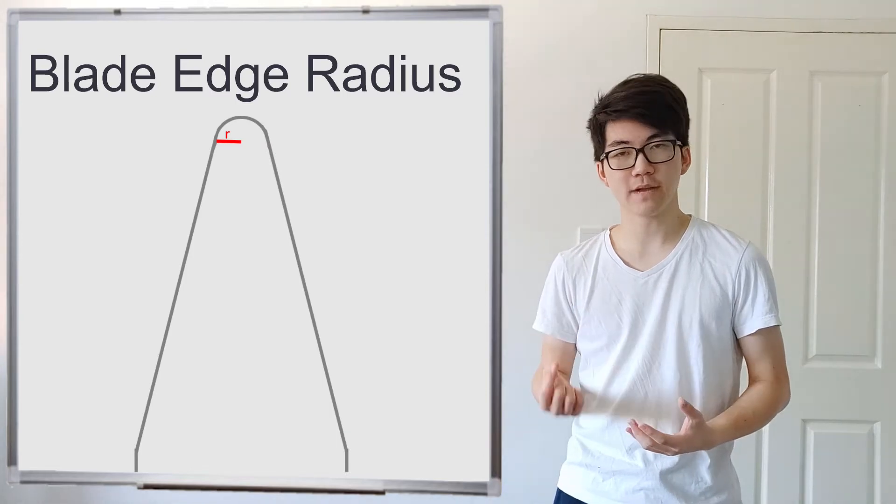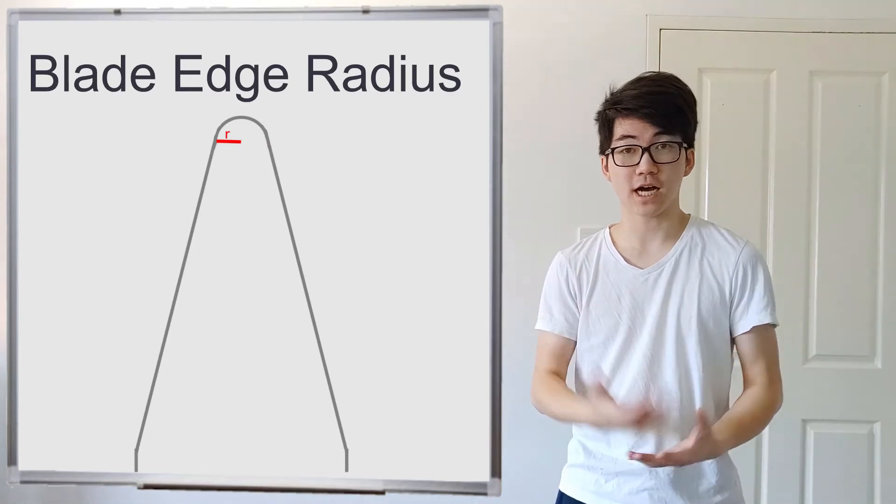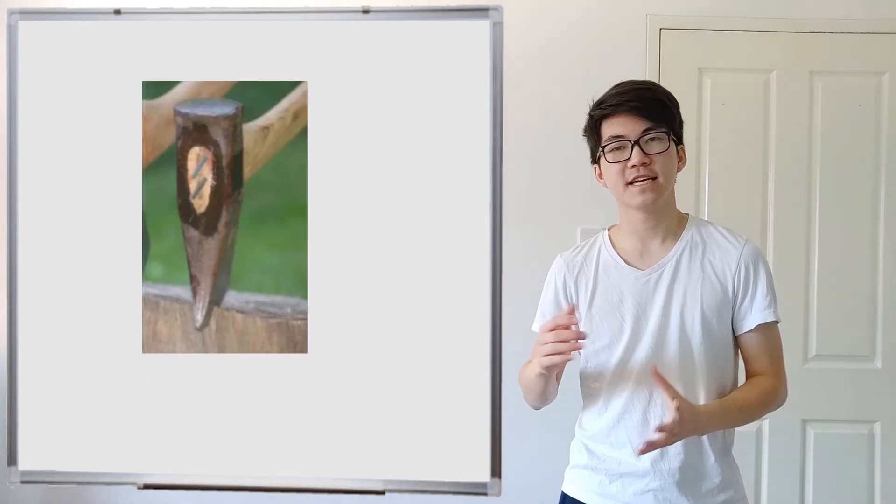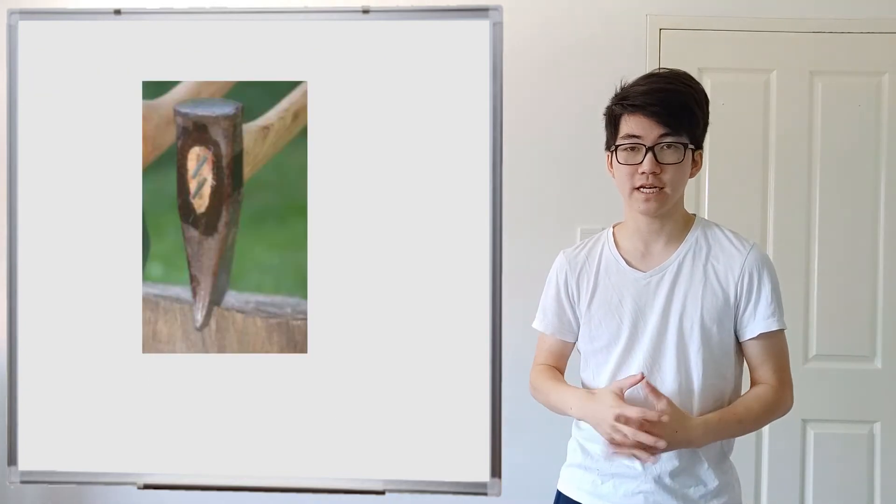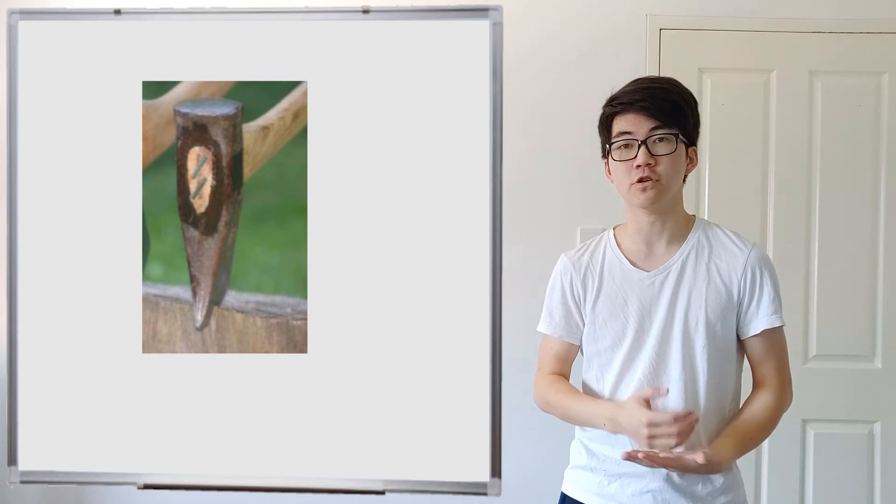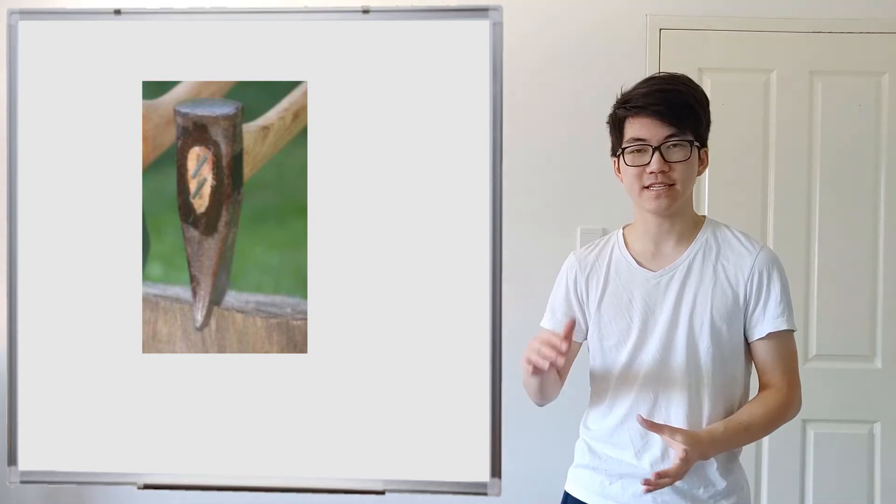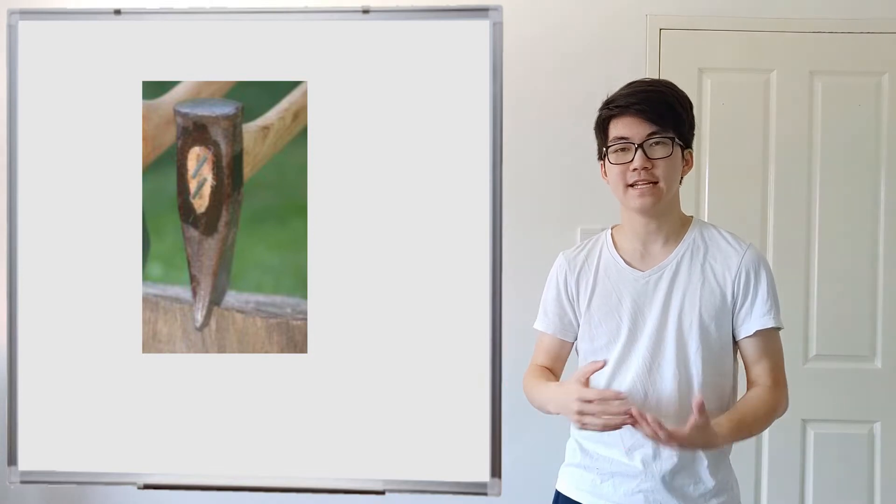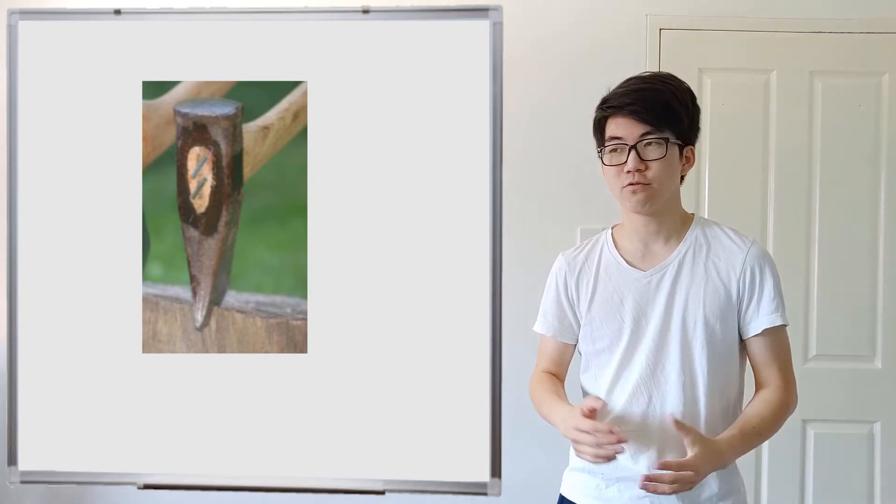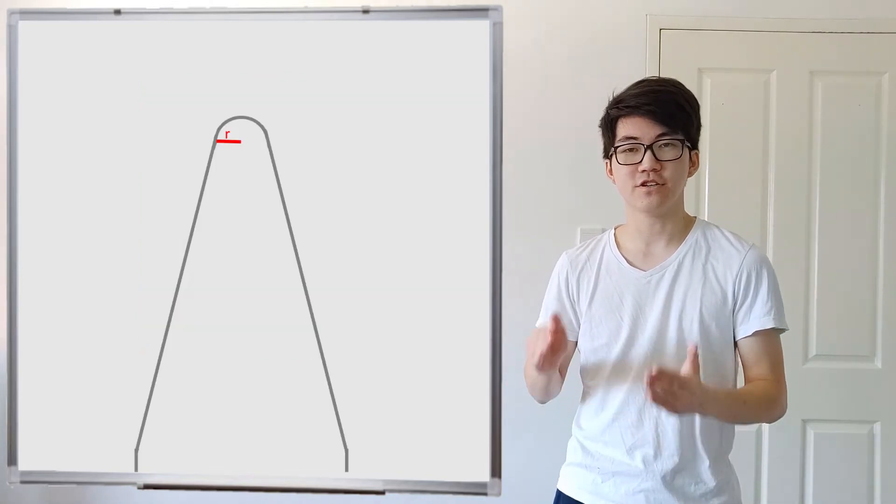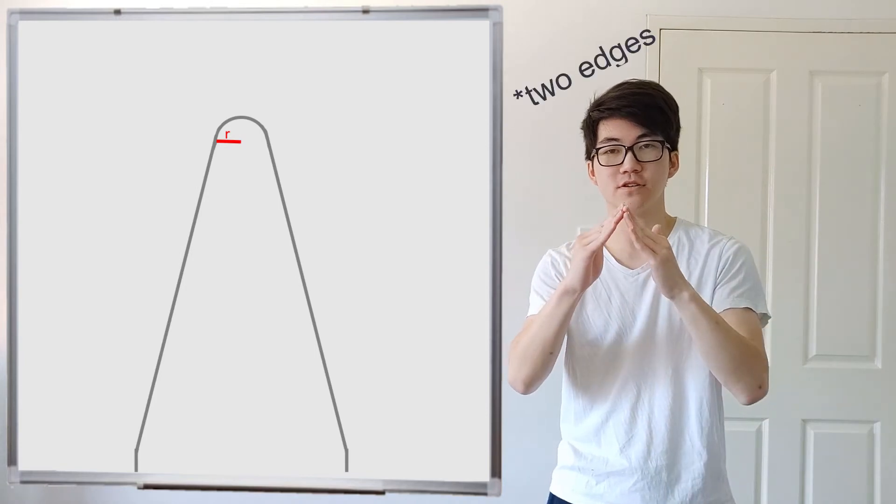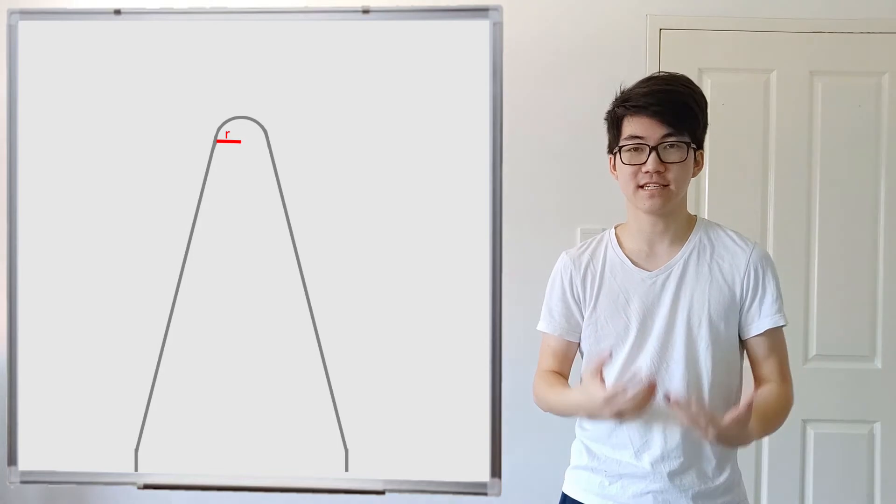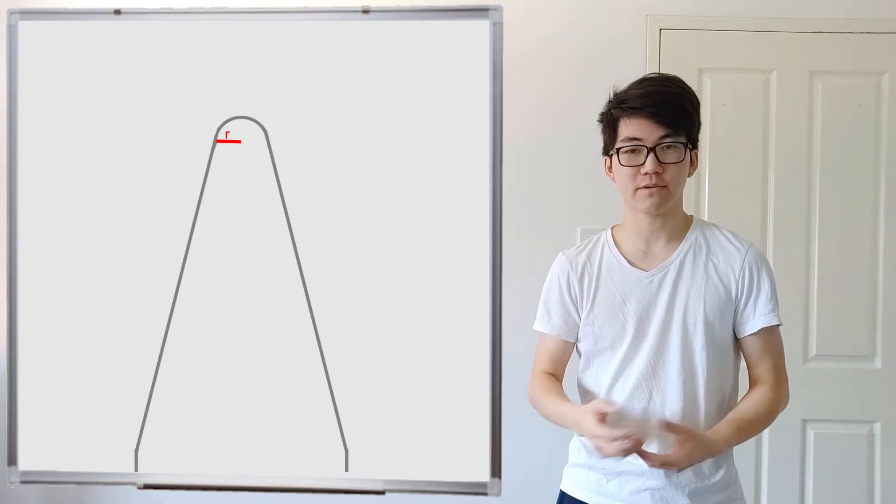So having a small blade edge radius would be a sharp knife, and having a large blade edge radius is a dull knife. And seeing that cross sectional semicircle is a lot easier when you look at a dull wood splitting axe. You can see that there's pretty much a semicircle on the end of the blade. And that's because it's really dull. Whereas if you sharpen that, then you'd think that you're getting the two points to come to a sharp point. But actually at the tip of that point is still a smaller round semicircle.